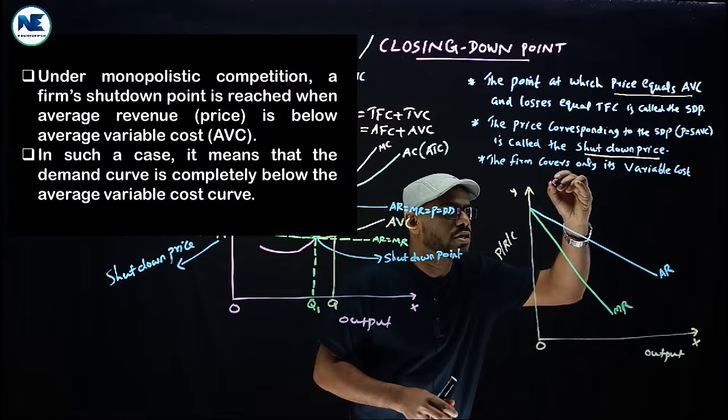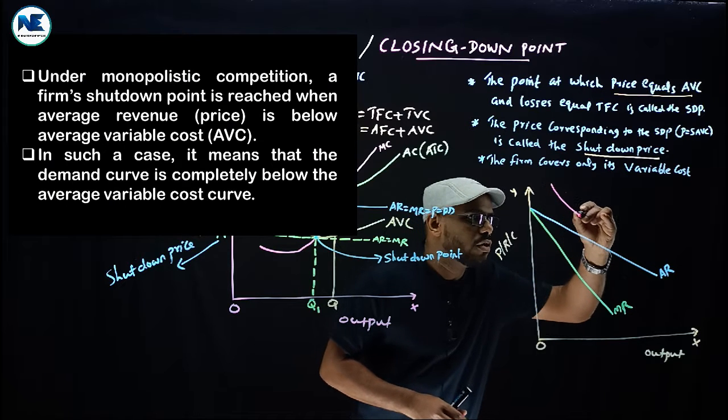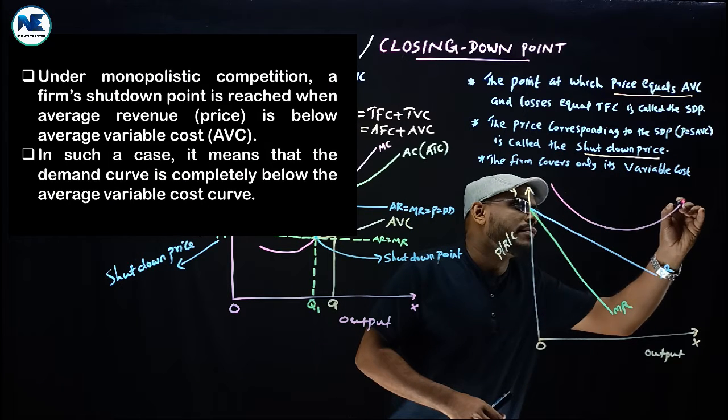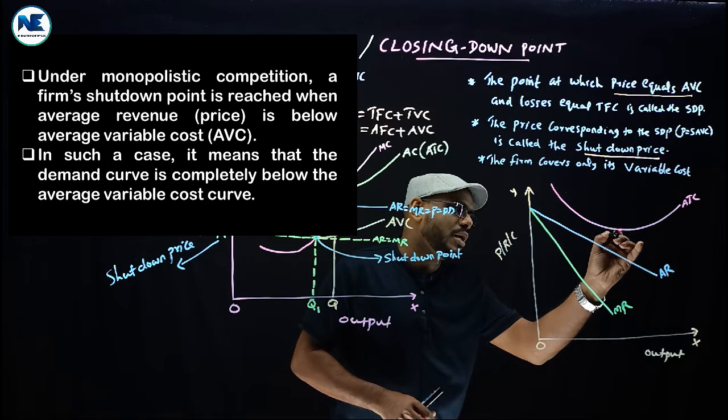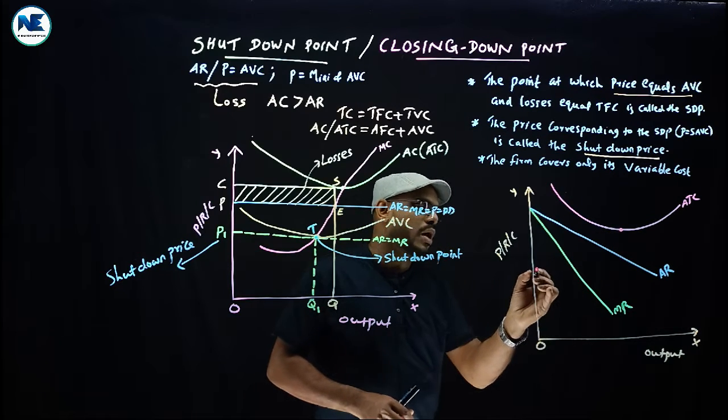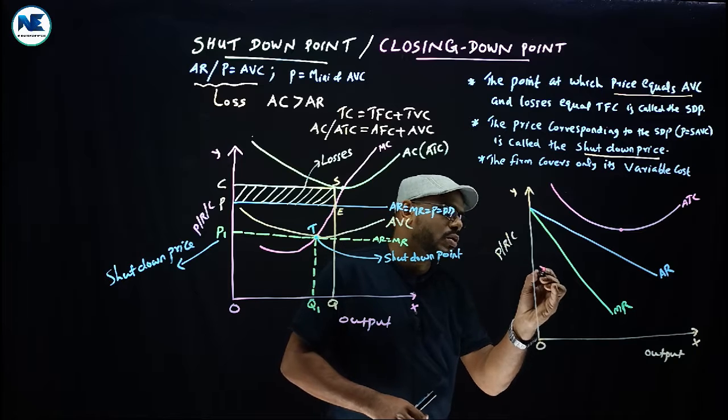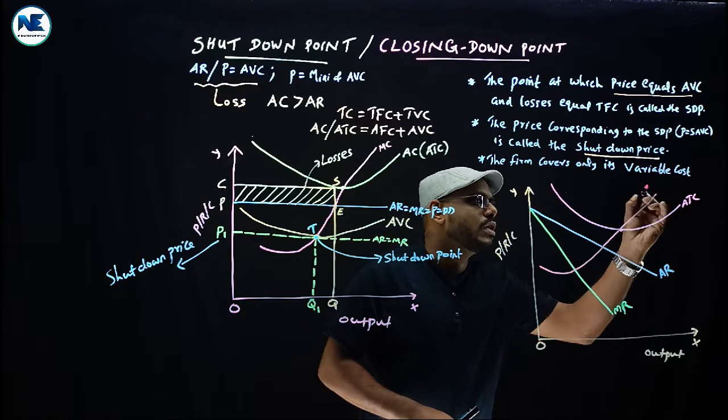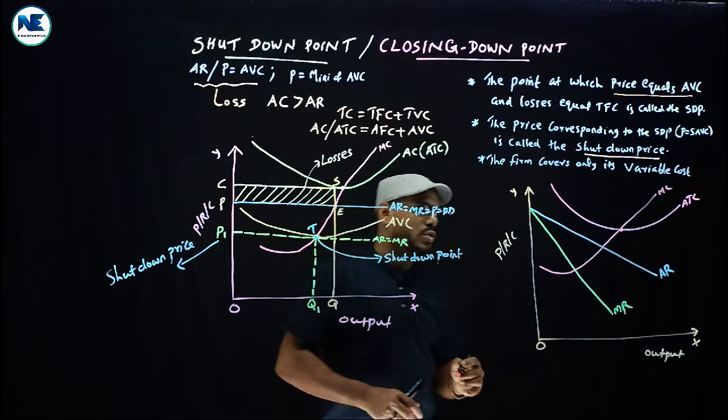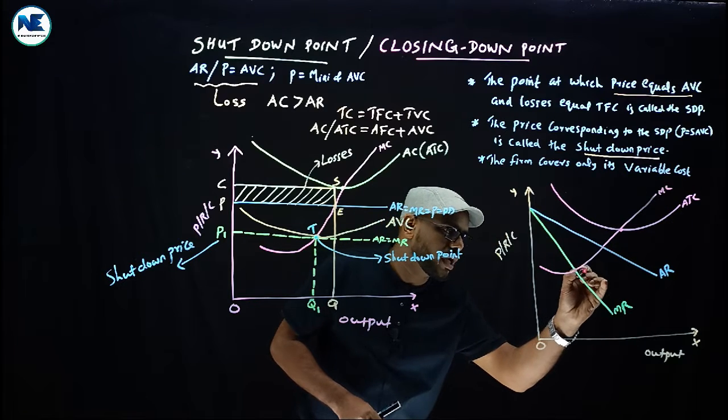This is average total cost. Below the minimum point of average total cost is the marginal cost curve. This is the short-run marginal cost.